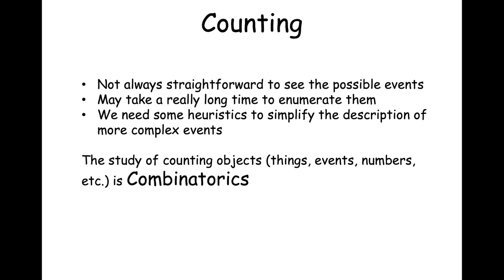When we want to list or count all alternatives in a sample space, it's not always straightforward to envision the events we might observe, and it can take a very long time to enumerate them. Therefore we need some help — some recipes and heuristics to simplify our description. The study of counting objects, whether things, events, or numbers, is called combinatorics, which you covered in part in discrete math.